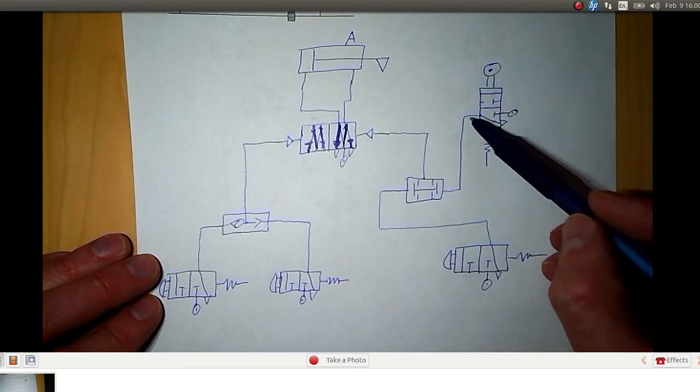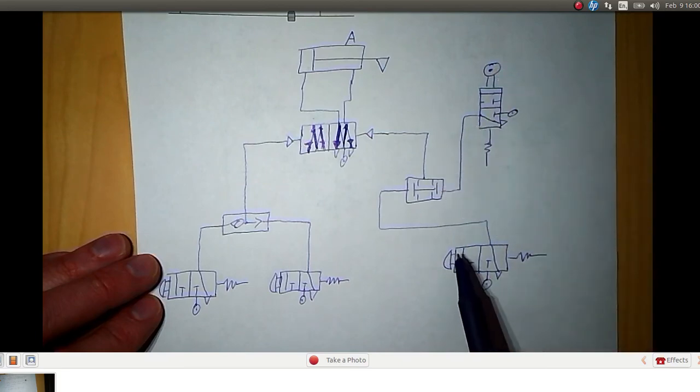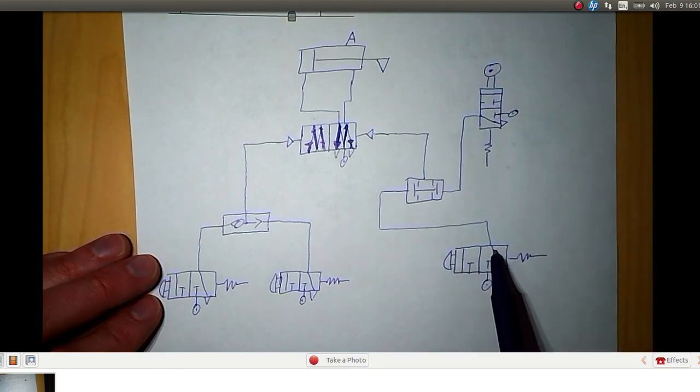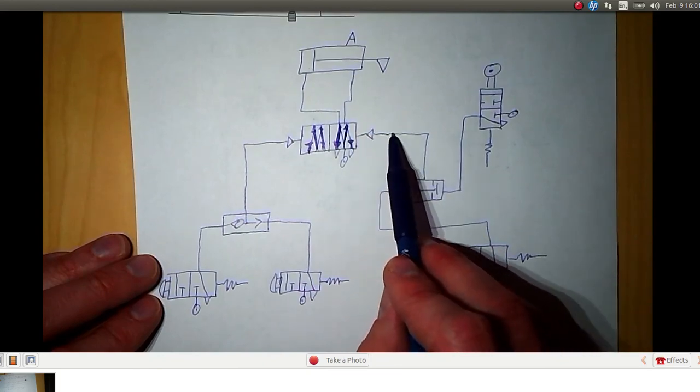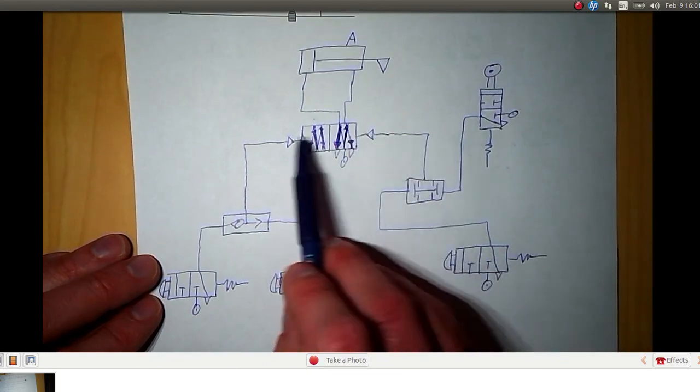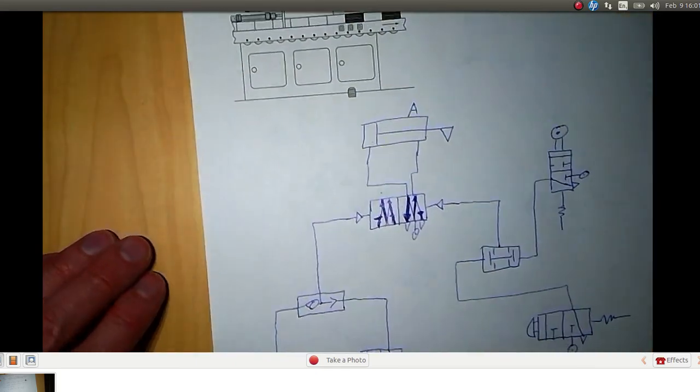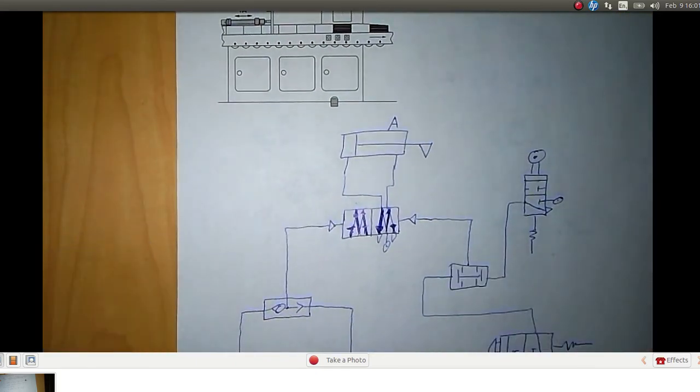If we also press this button to supply pressure here, then we get pressure on this line, and this valve will be actuated back to return the cylinder to the position shown.